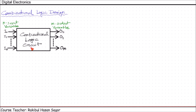This combinational circuit consists of input variables, logic gates, and output variables. Both input and output data are represented by binary signals — they exist in two possible values: logic 1, representing 1 or 5 volts, and logic 0, which is generally represented by zero voltage.